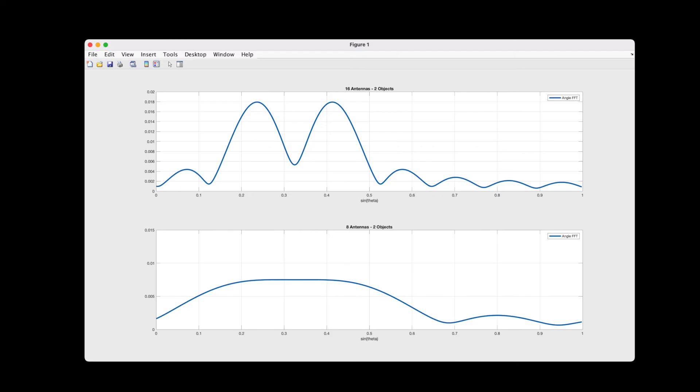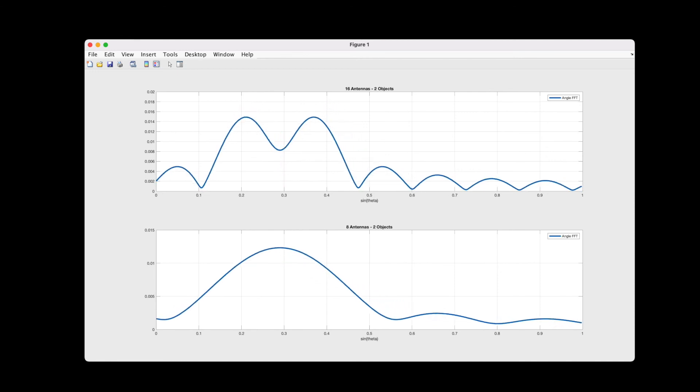There are still, however, two distinct peaks with the 16 antenna array due to the higher resolution. In fact, we can resolve objects down to about 8 degrees or so. So, increasing the number of antennas is good, because it improves our ability to resolve objects that are closer to each other.